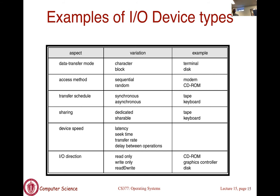The types of devices and their characteristics are shown in a table here. For transfer mode: character-based includes terminals and keyboard; block-based is disk. For access method: sequential includes modem and keyboard; random includes disks and CD-ROMs. Transfer methodology: synchronous devices include tape; asynchronous (non-blocking) includes keyboard. IO devices can be shared, like disk, or dedicated, like tape. Device speed includes characteristics like latency, seek time, transfer rate, and delay between operations. Finally, devices can be read-only like CD-ROM, write-only like a graphics controller, or read-write like disk.